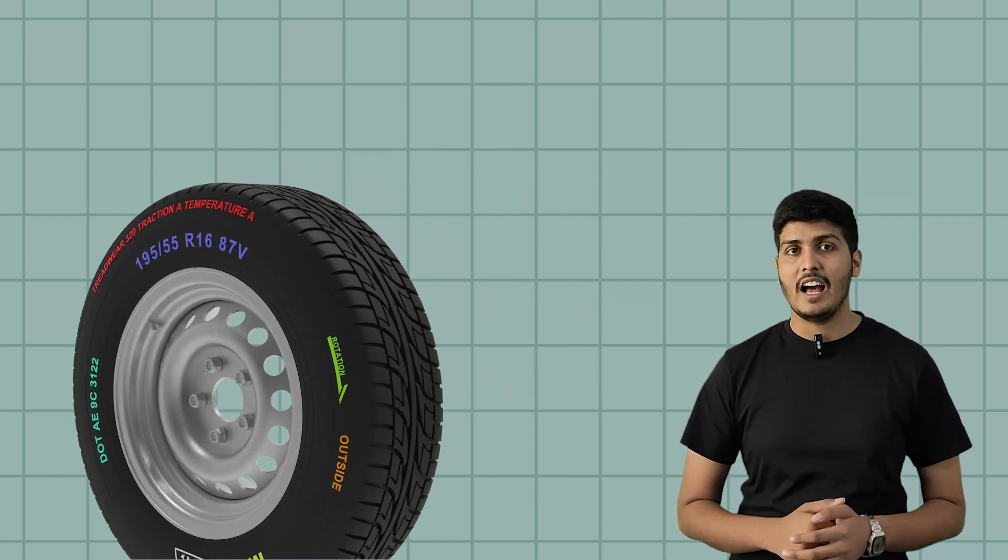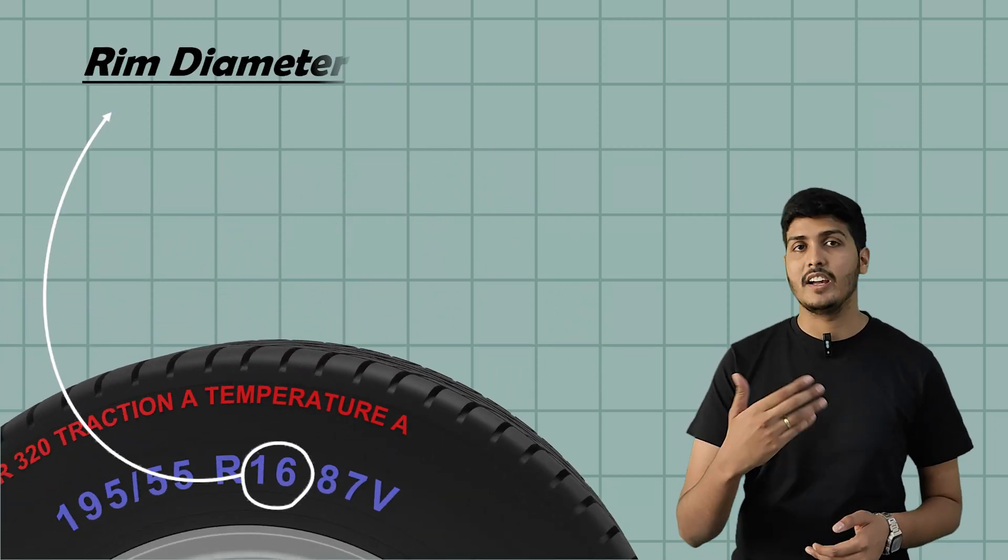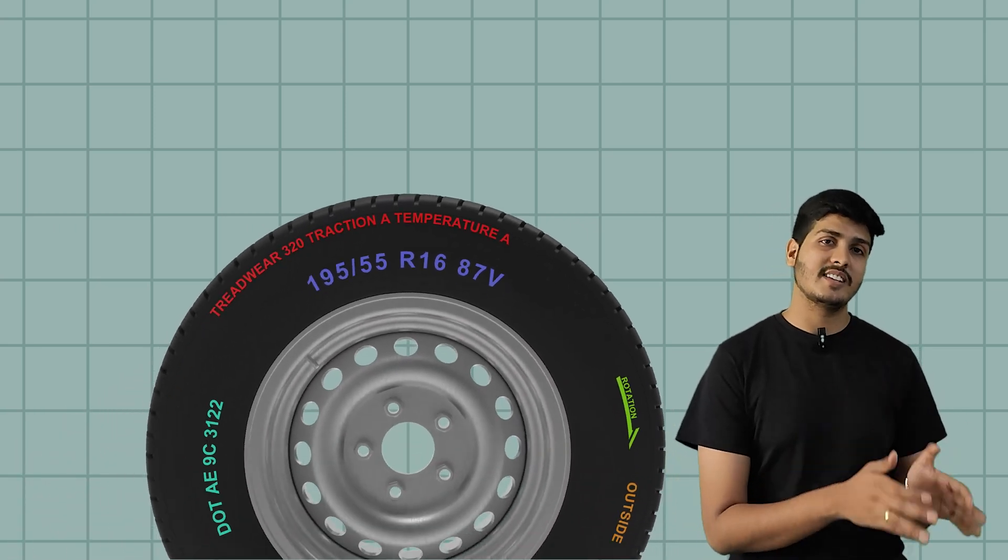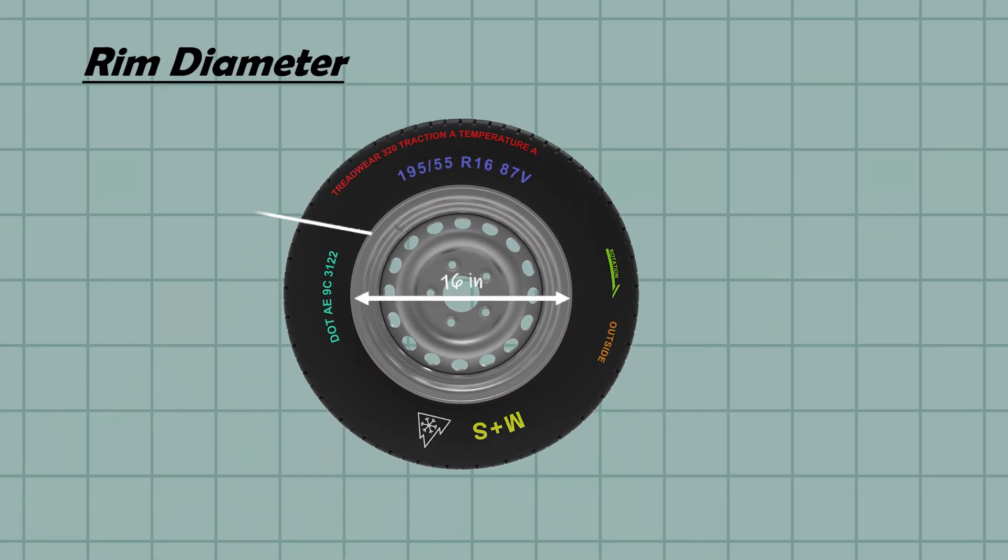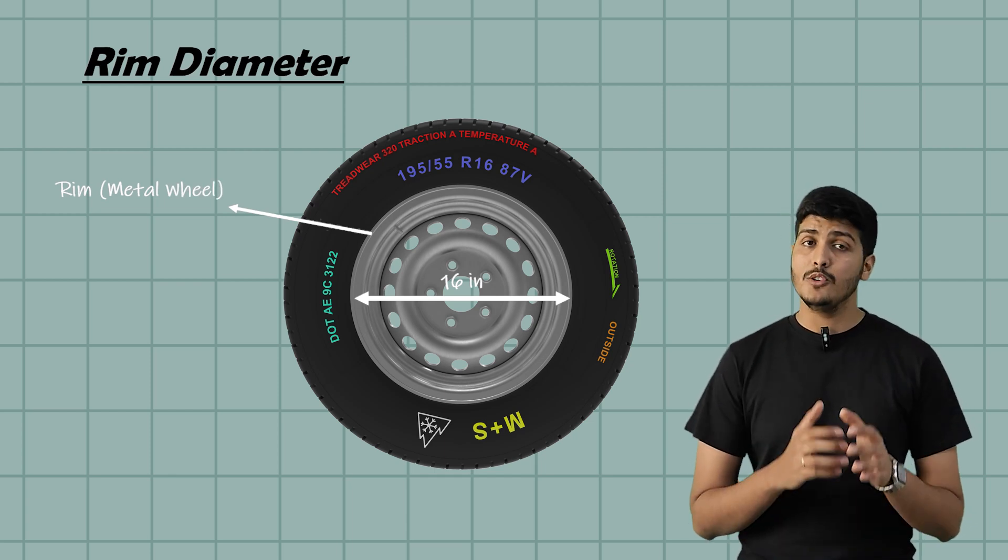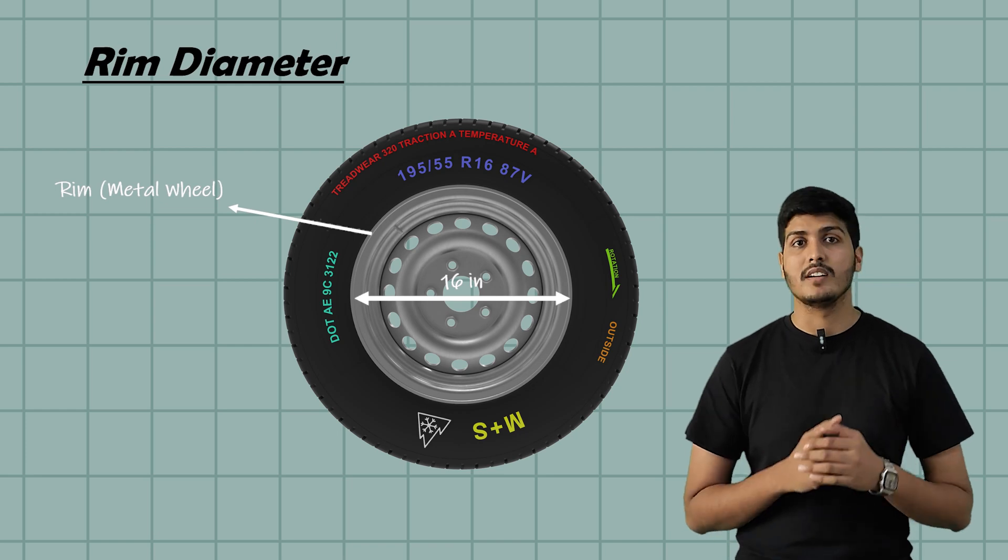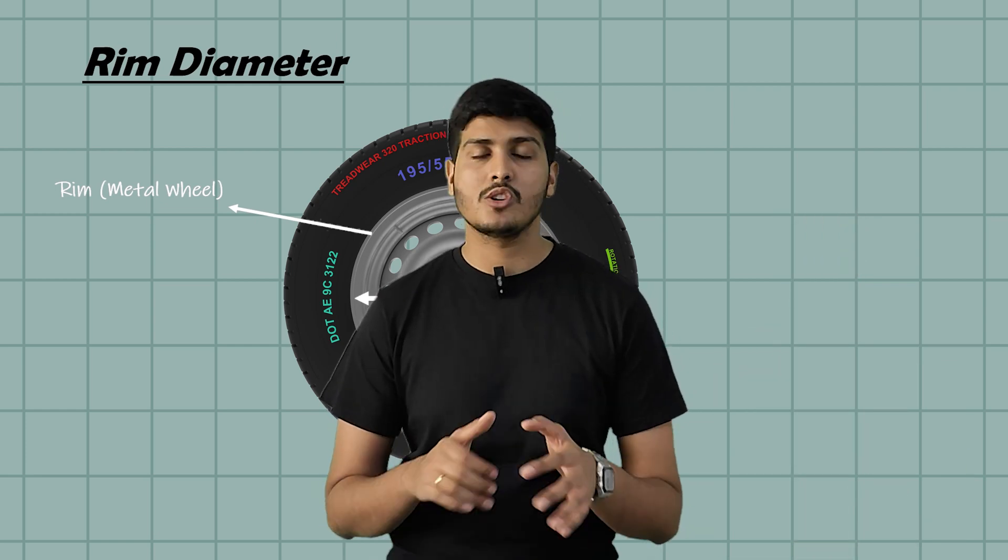Next is 16 and this one is pretty straightforward. This tells you the rim diameter in inches. This means this tire is designed to fit a 16 inch wheel, nothing more, nothing less. The rim is the middle part of your wheel, the part the tire wraps around. So if your car comes with a 16 inch wheel, you have to use the tire with the same number. If you try to fit a 17 inch wheel on a 16 inch rim, it's just not going to work.